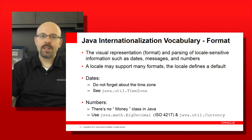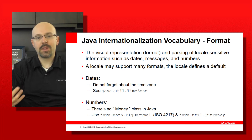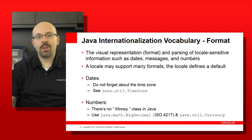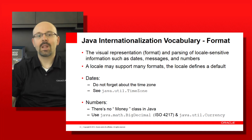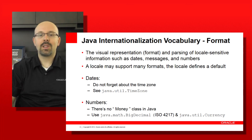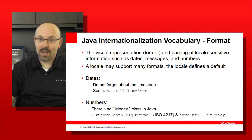Another important concept when you talk about locales is the concept of format. A format is a specific visual representation and a set of parsing rules for locale-sensitive information, such as dates, messages, and numbers. A locale may support many different formats. For example, in Canada, you don't represent figures in the same way whether you use French or English. In the case of dates, don't forget the time zone, because the java.util.Date object implicitly takes the time zone into account. But if you don't specify it when you create the date, the object will be created with the default time zone for the server, which is sometimes not what you want.